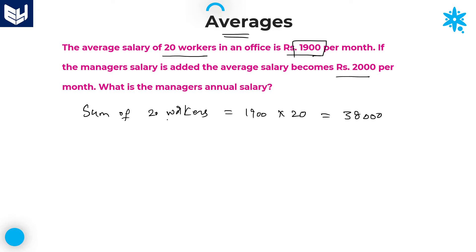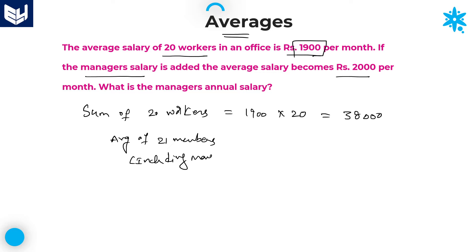After that, for these 20 workers, if the manager's salary is also added, then the average becomes 2,000 per month. Here, the average of 21 members — that is 20 workers plus 1 manager, total 21 members — is computed using the sum of 20 workers, which is 38,000, plus the manager's salary X.